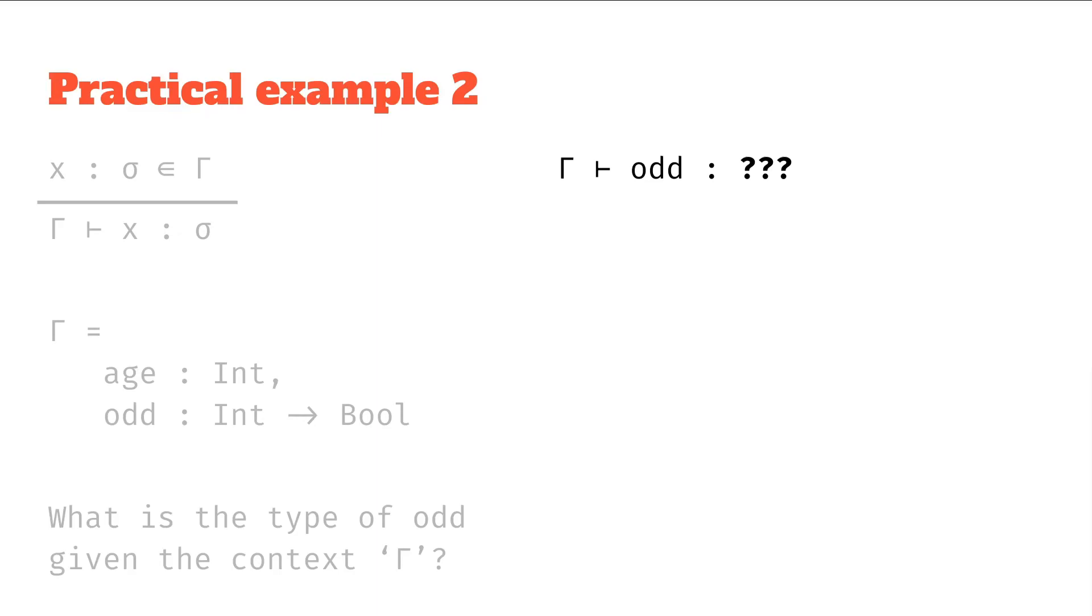Again, we can figure out how to match the rule to that. So we can say, well, in this case, our variable is odd. So the x is going to be odd. And if we look at the context, well, our sigma is going to be int to bool.